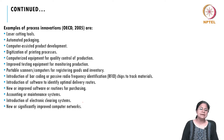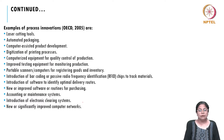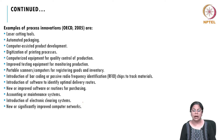Examples of process innovation include: laser cutting tools, automated packaging, computer-assisted product development, digitization of printing processes, computerized equipment for quality control of production, improved testing equipment for monitoring production, portable scanners, new and improved software, routines for purchasing, accounting or maintenance systems, introduction of electronic clearing systems, new or significantly improved computer networks, and introduction of bar coding or passive radio frequency reading (RFID) chips to track material through the supply chain.